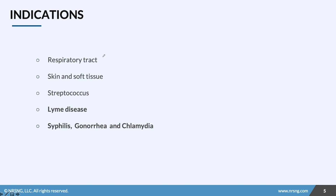Macrolides are indicated for all types of infections: respiratory tract, skin and soft tissue, and streptococcus. I want you to focus on the last two — Lyme disease is a very big one for macrolide antibiotics, and STIs, which are sexually transmitted infections. This drug class is commonly prescribed for these particular diseases.